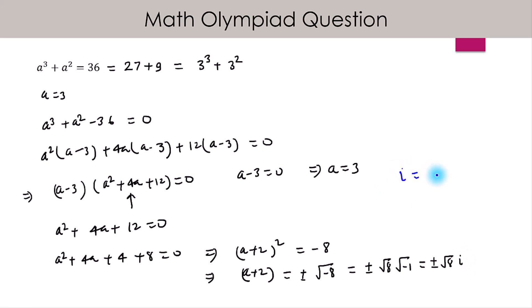Since a + 2 = ±√8i, which can be simplified as ±2√2i, this implies a = -2 ± 2√2i.